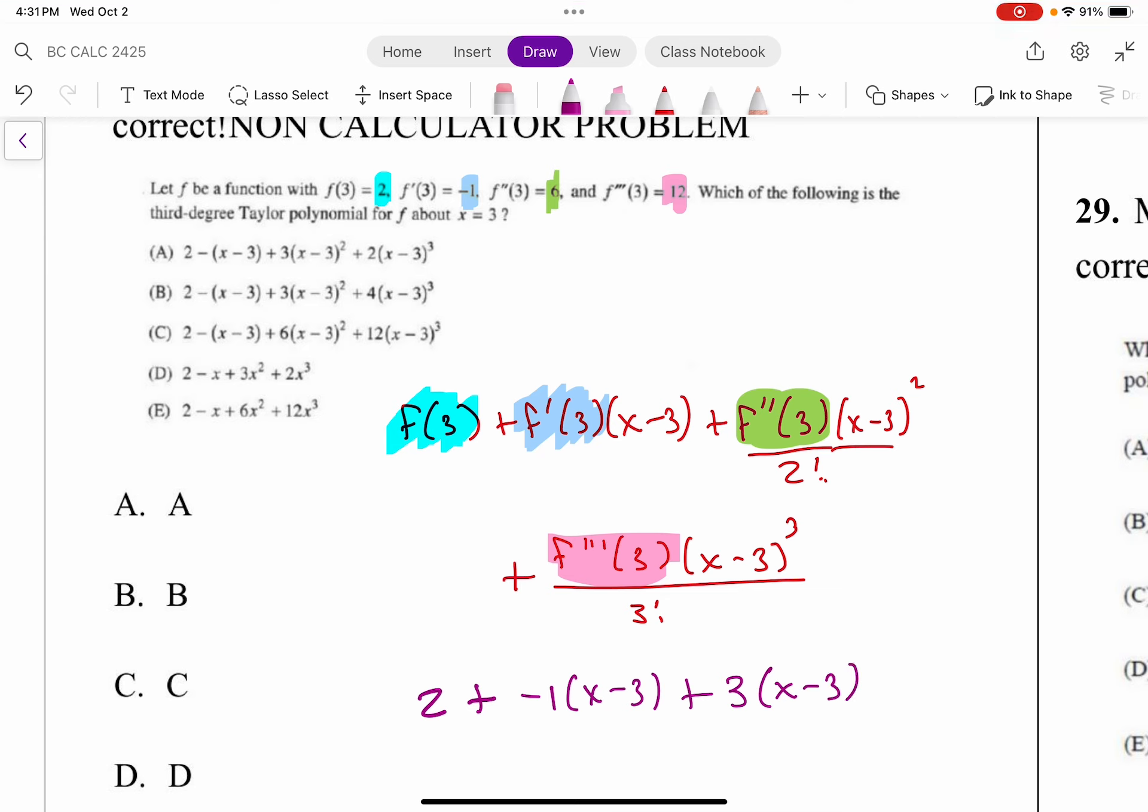I wonder if we can get the answer. So far I think we've got, I mean it's definitely A or B, right? And we just need one more term I guess. And so then put the 12 in that place, 12 divided by 3 factorial is 4.